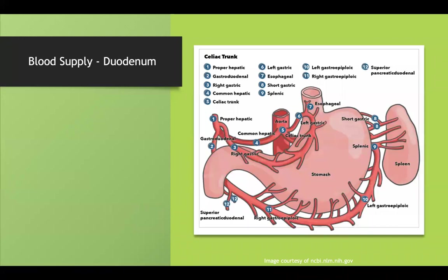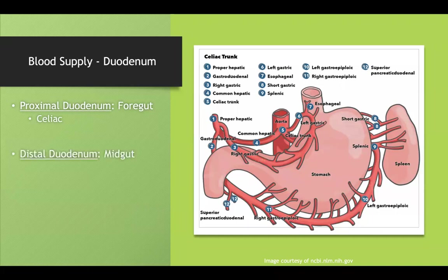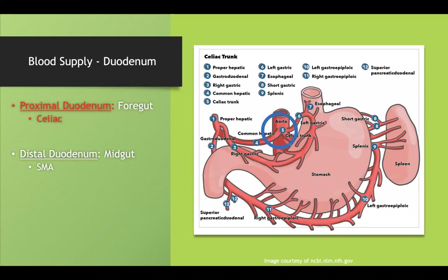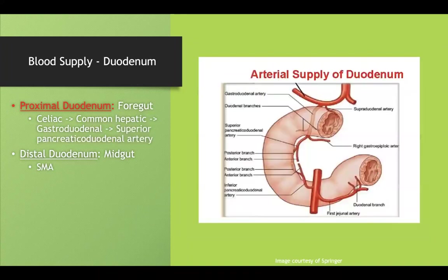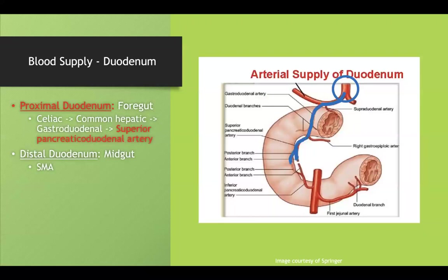The duodenum receives blood supply from two of our three primary GI arteries. The proximal duodenum is part of the foregut, supplied by the celiac artery — blood flows from the celiac trunk through the common hepatic artery, then the gastroduodenal artery, and finally the superior pancreaticoduodenal artery. The distal duodenum is part of the midgut, supplied by the superior mesenteric artery via the inferior pancreaticoduodenal artery.